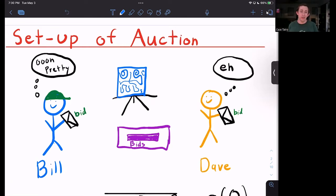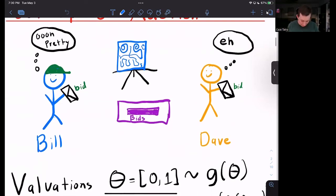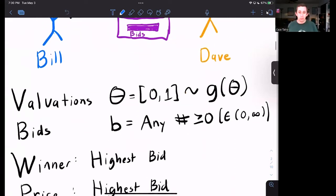There's a piece of art in the middle of the room, and each of Bill and Dave are going to write down how much they want to bid for the art, how much they want to pay if they win. They are going to make those bids separately so that the other person can't see what they're writing down. They're going to seal them in an envelope and drop them in this beautifully drawn bid box.